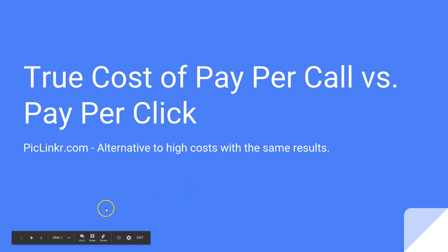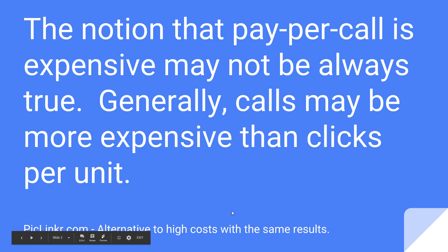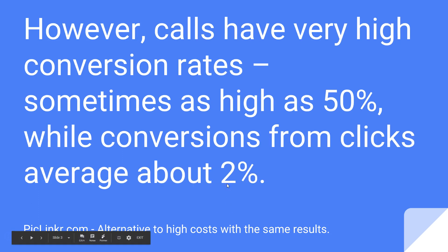The notion that pay-per-call is more expensive may not always be true. Generally, calls may be more expensive than clicks per unit, but calls have a very high conversion rate — sometimes as high as 50% — while conversions from clicking to a website average around 2%. Advertisers know this, so they charge accordingly: cost per call is higher per unit, cost per click is usually lower.